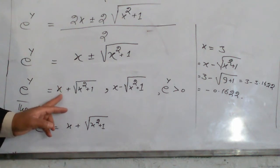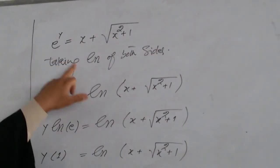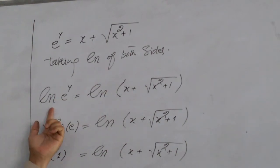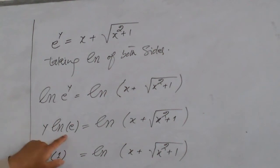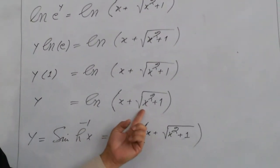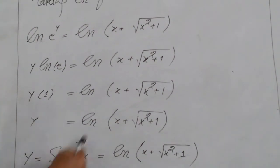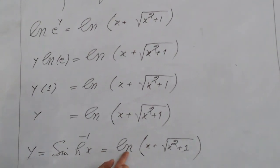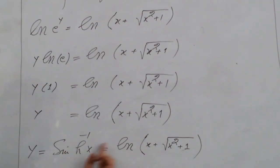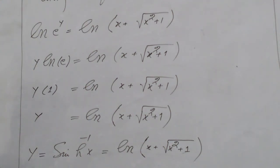To calculate the value of y, we take the natural logarithm of both sides. Using the property that the natural log of e raised to y equals y, we get y equals the natural log of x plus the square root of x squared plus 1. Since y equals sine hyperbolic inverse of x, we conclude that sinh⁻¹(x) equals the natural log of x plus the square root of x squared plus 1. This is the relation between the inverse hyperbolic function and the logarithmic function.